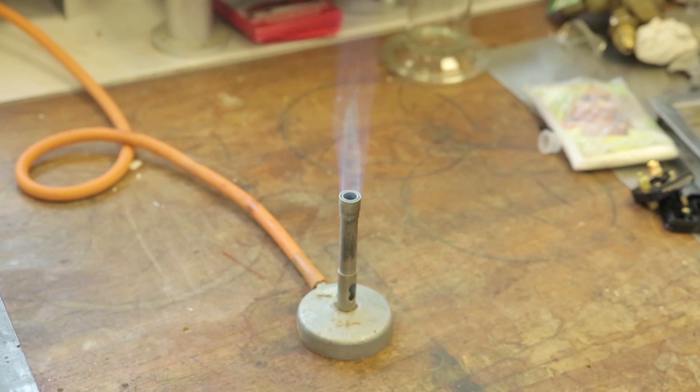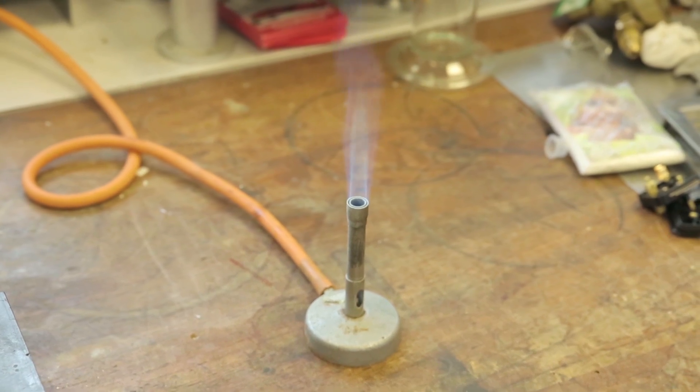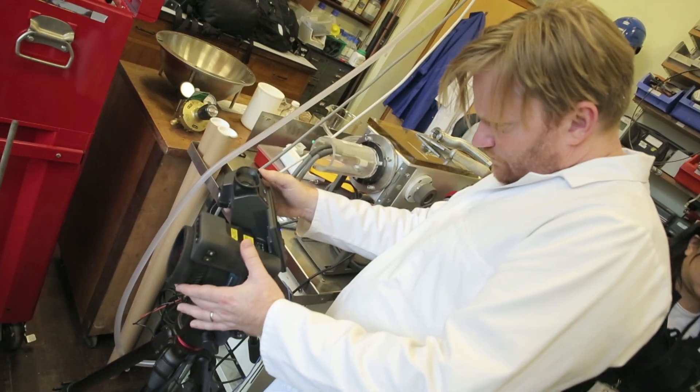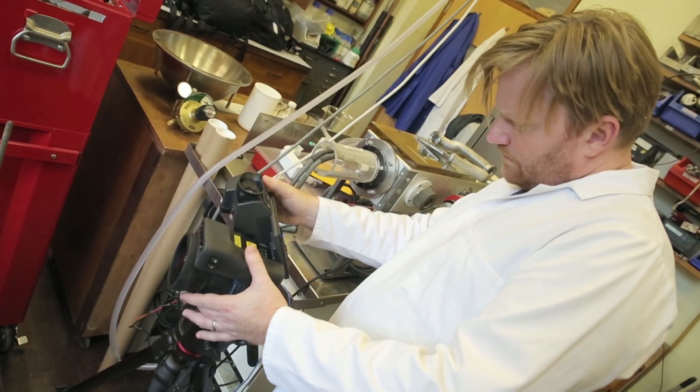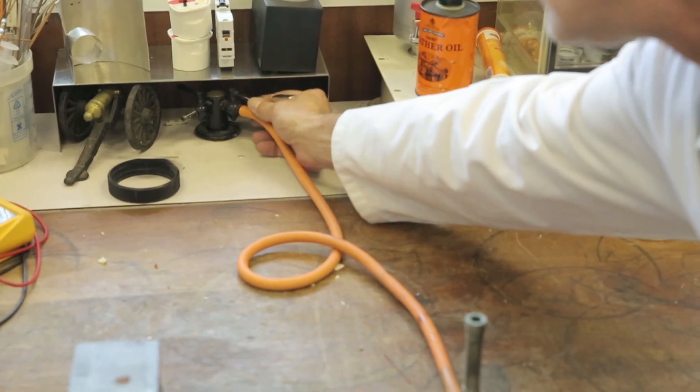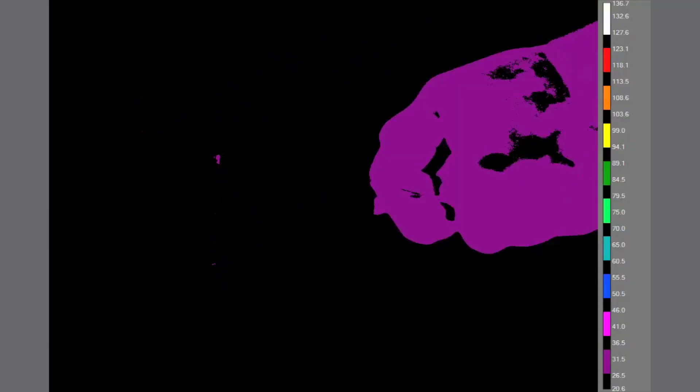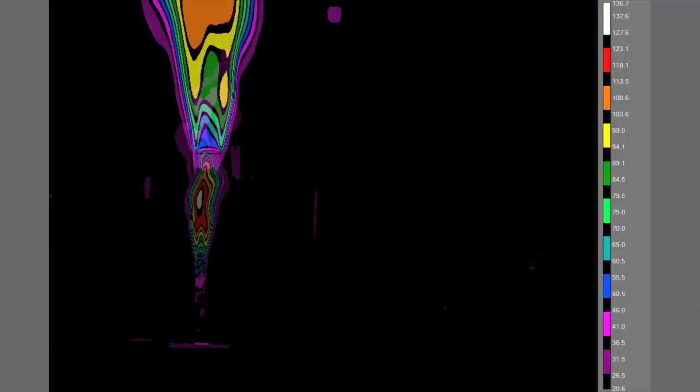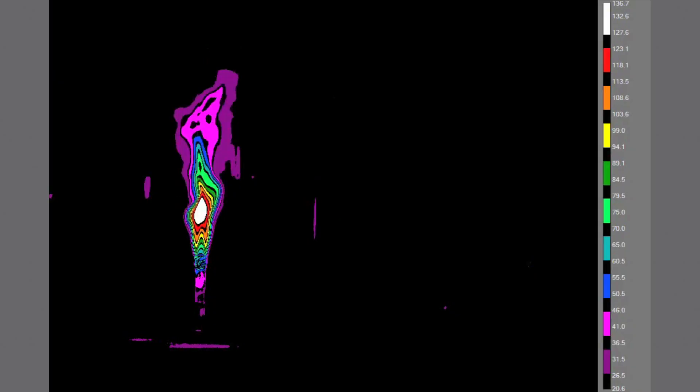If you look at a flame, you can see different parts are different colors. But most people just have to take their teacher or professor's word that some bits of the flame are hotter than others. With a thermal imaging camera, we can actually show you that this is true. And also, you can see more structure to the flame than you can with your eye.